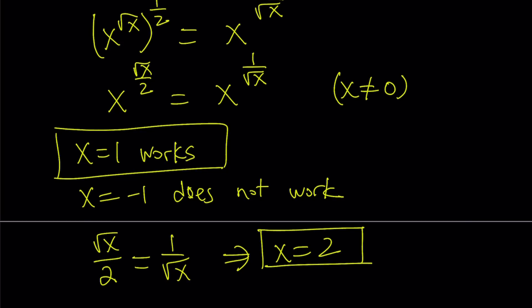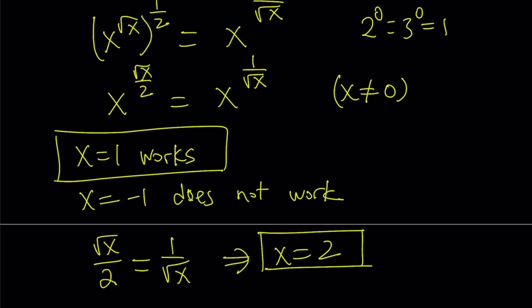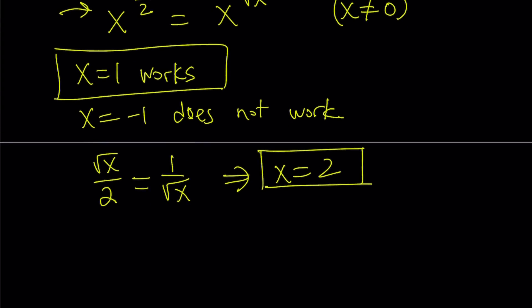Are there any other solutions? There aren't. Because if you think about it, sometimes the exponents can be 0, and the bases don't matter. For example, you have 2 to the power of 0 equals 3 to the power of 0, because they're both equal to 1. But in this case, the exponents cannot equal 0. If you look at it, even though x can be 0 on the left-hand side here, on the right-hand side, it's not allowed. Therefore, we don't have that case, and 1 and 2 are going to give us pretty much all the solutions.